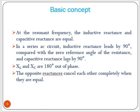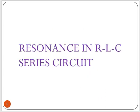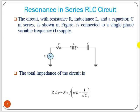In a series RLC circuit, inductive reactance leads by 90 degrees compared to the zero reference angle of resistance, and capacitive reactance lags by 90 degrees. So XL and XC are basically 180 degrees out of phase. The opposite reactances cancel each other completely when they are equal.